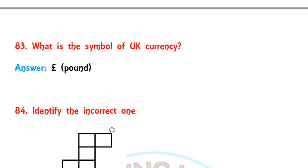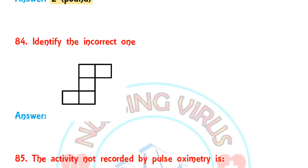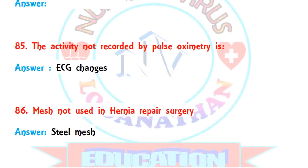What is the symbol of the UK currency? The UK currency is called the pound — that is the correct answer. They may have given the sign or asked the currency name. Next, from the aptitude side: identify the odd one or incorrect one — they asked with color pictures, and among the four options, one specific image is the odd and incorrect one.